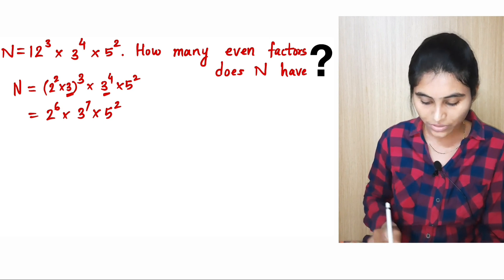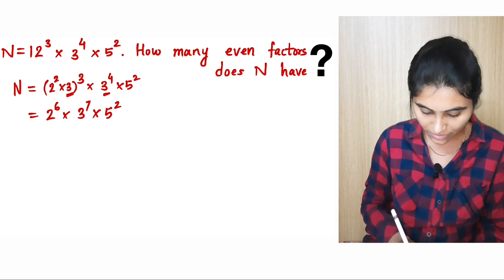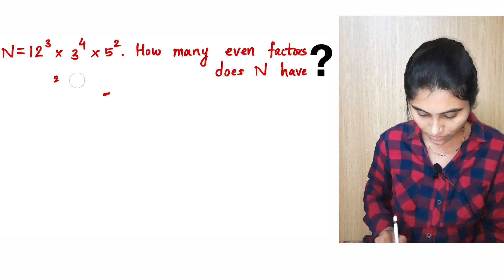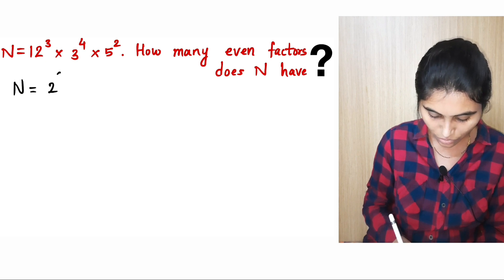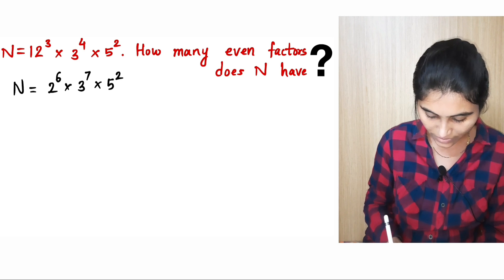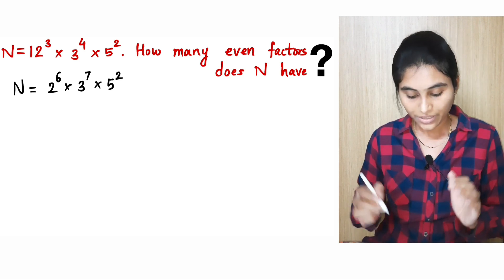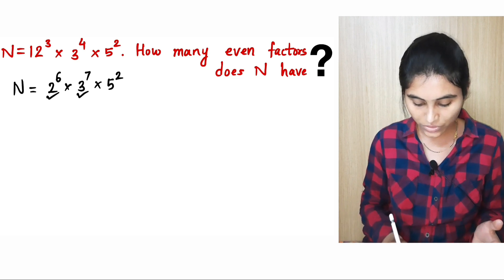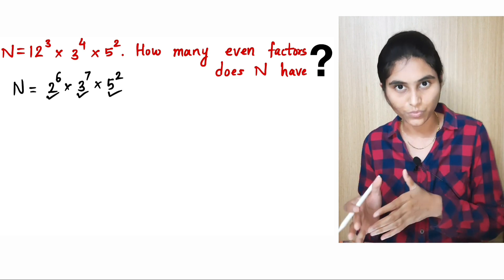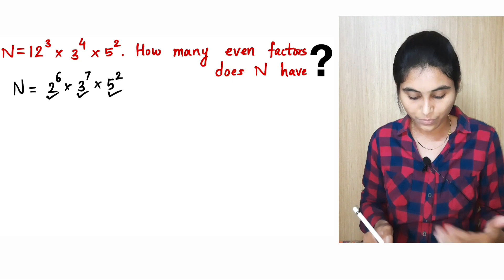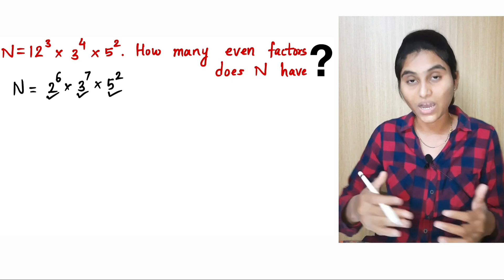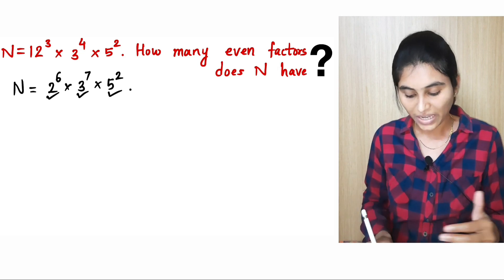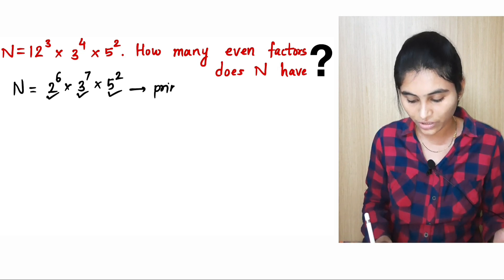So we have the prime factorization of n as: n is equal to 2 raise to 6 times 3 raise to 7 times 5 square. Here 2, 3, and 5 are prime numbers, and 2 raise to 6, 3 raise to 7, and 5 square are the powers of those primes. This is the prime factorization of the number n.